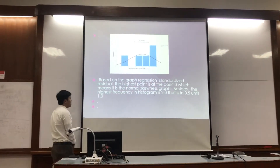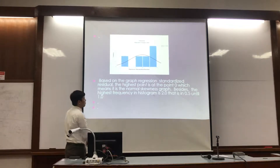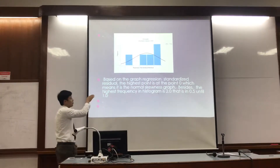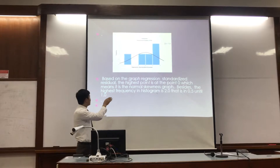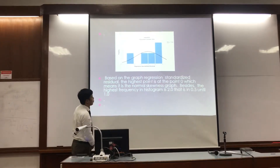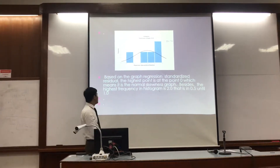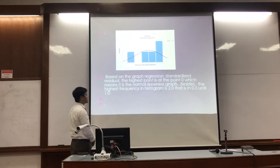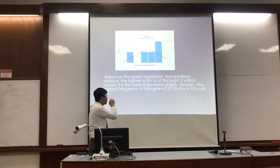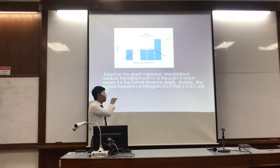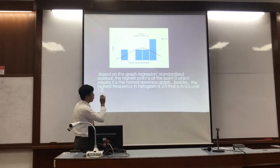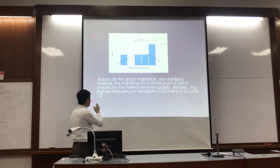This picture is about the ROE. From the figure, we can know that, starting on the figure, the relationship is standardized. The highest point is at point 1, which means that it is almost a weight loss group. Besides, the higher functionality is 2.0, that is from 0.5 on 31.